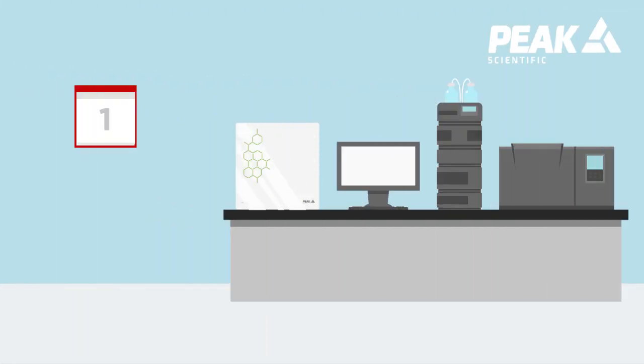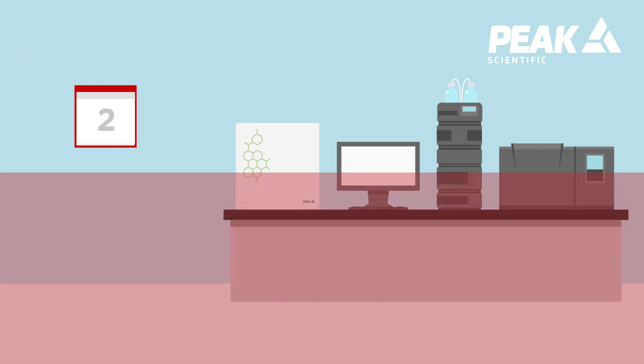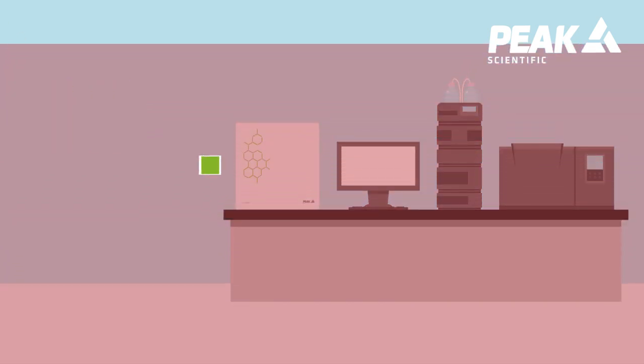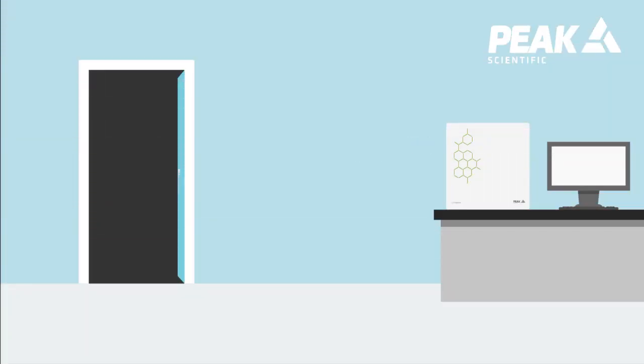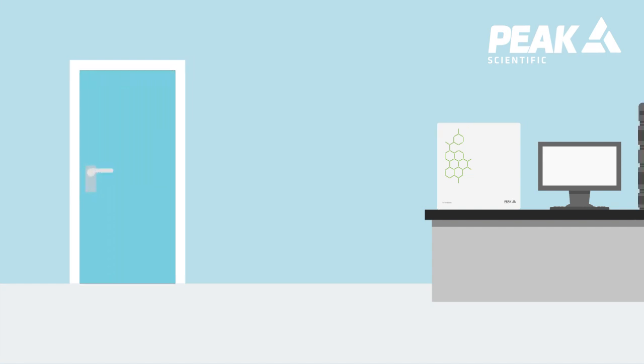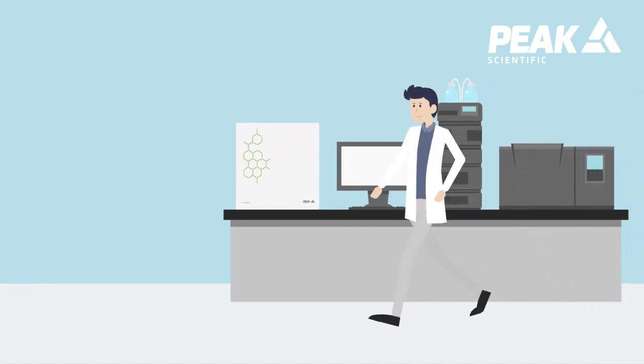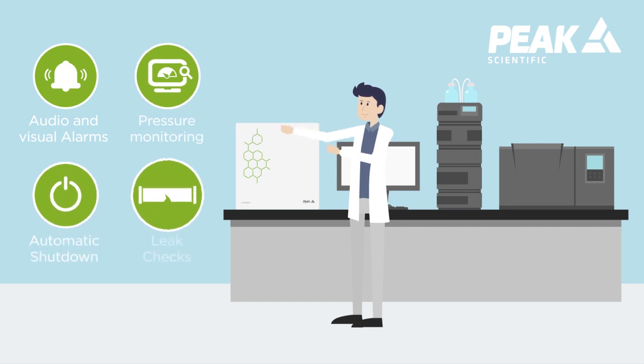On the other hand with the Peak Precision hydrogen generator it would take 3 days to reach LEL because the hydrogen capacity is only 500 cc per minute. This is also assuming that no hydrogen would escape the lab in those 3 days. Though the likelihood of this happening is extremely low due to the built-in safety features of every Peak gas generator.